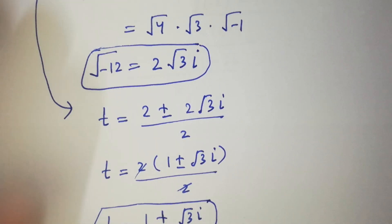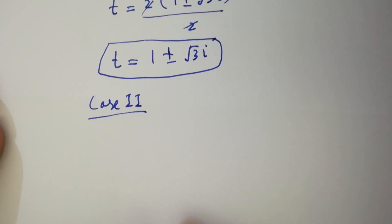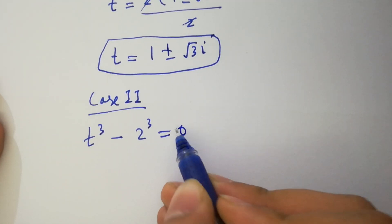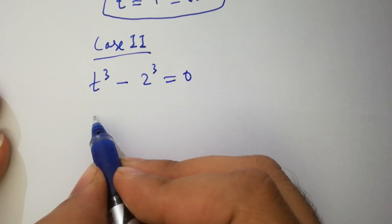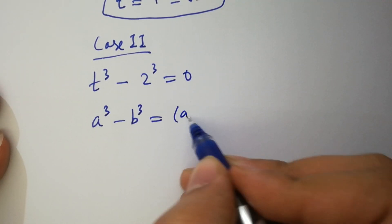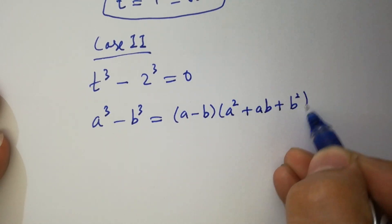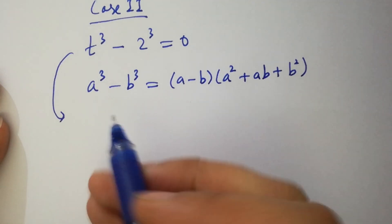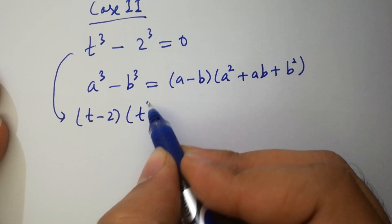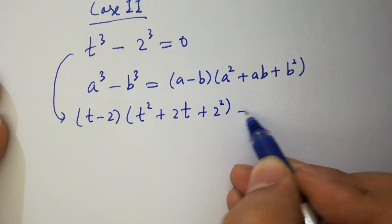Now I am going to move to the second case, which is t cubed minus 2 cubed equal to 0. As we know, a cubed minus b cubed equals a minus b times a squared plus ab plus b squared. It will be t minus 2, times t squared plus 2t plus 4, equal to 0.